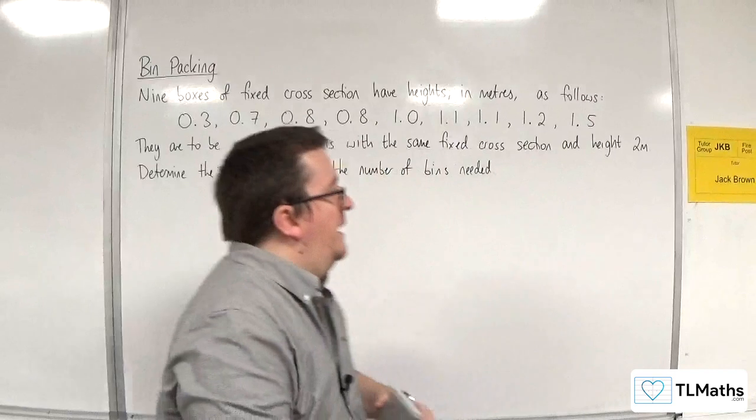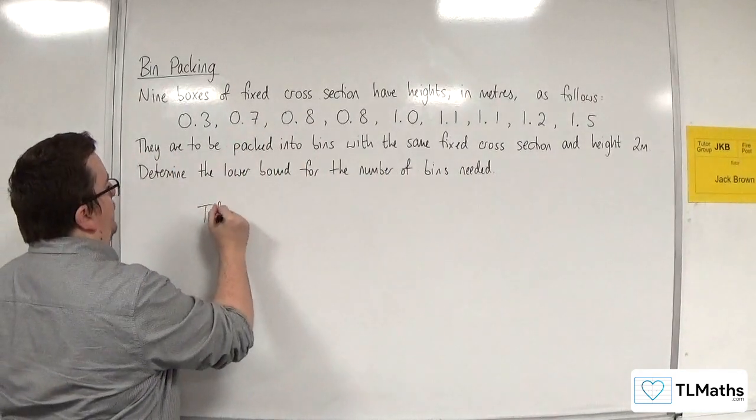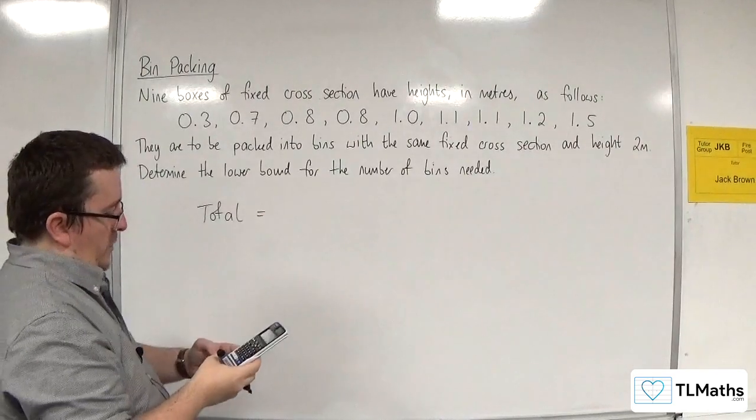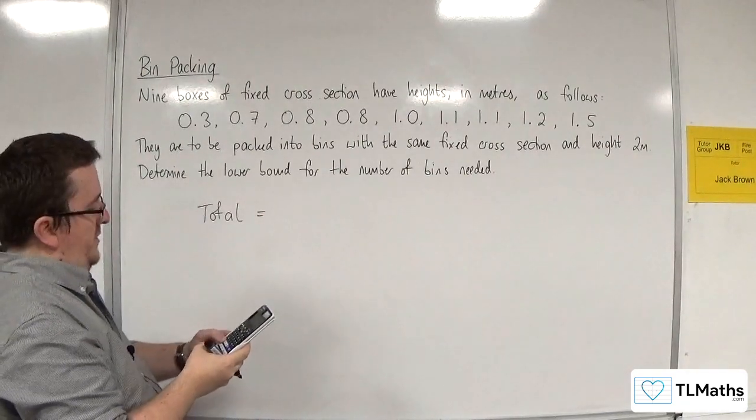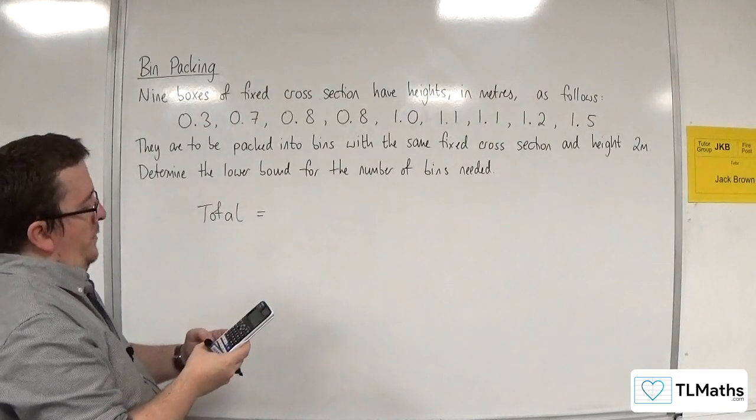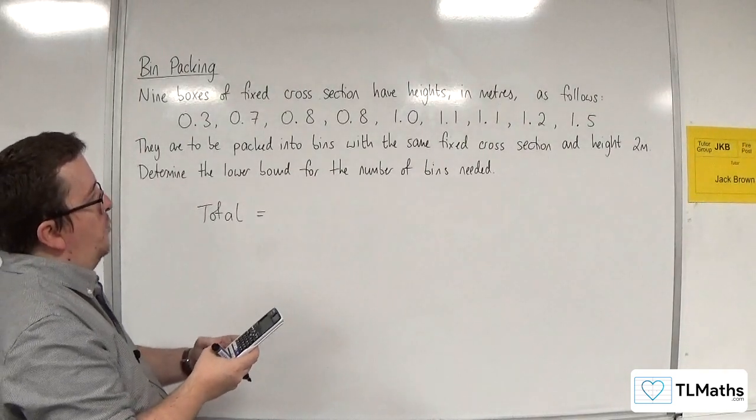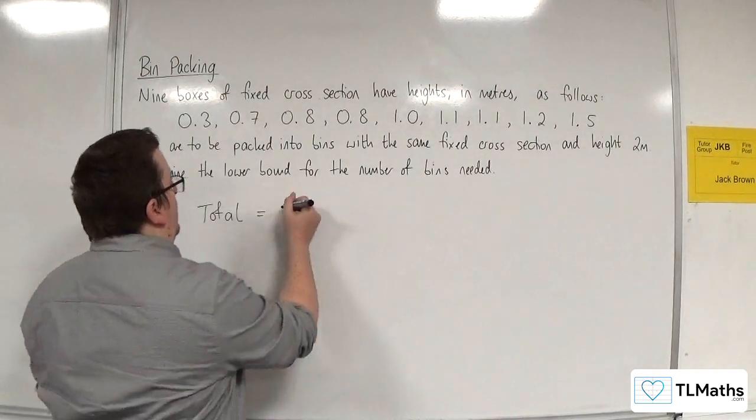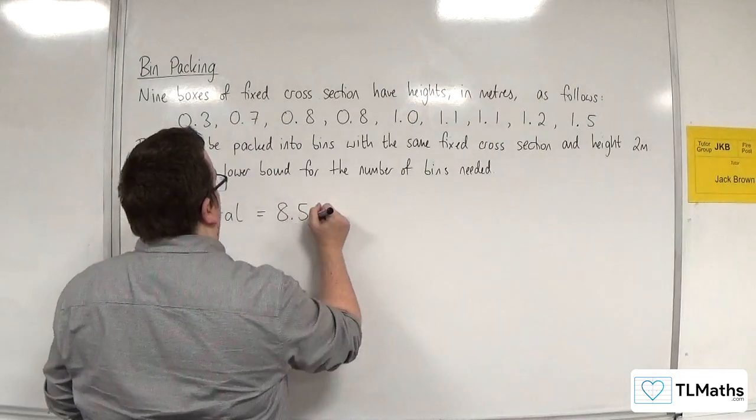So I'm going to add all of those lengths together. So I'll find the total. So we've got 0.3, 0.7, 0.8, 0.8, 1.0, 1.1, 1.1, 1.2 and 1.5. So that gets us 8.5 meters.